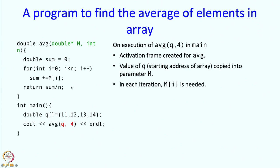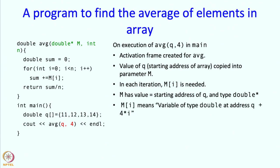And in each iteration, what is going to happen? Mi is needed. Now, like the example that we took earlier, this m has exactly the same value as this q. So, if we write m[i], m is going to mean the same variable as q[i] because m and q mean the same thing, m and q have the same value. So, m has the value starting address of q of type double, so m[i] means variable of type double at address q plus 4i, or it is the same thing as q[i].